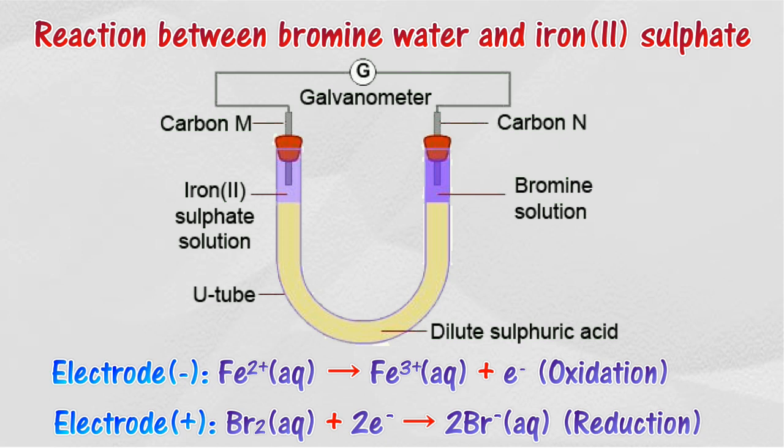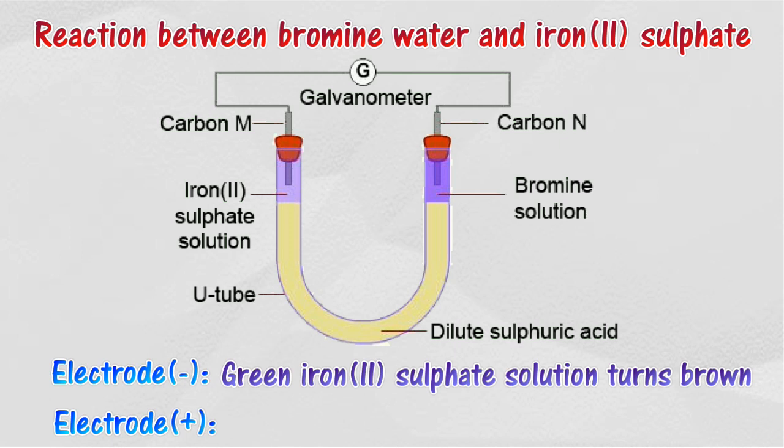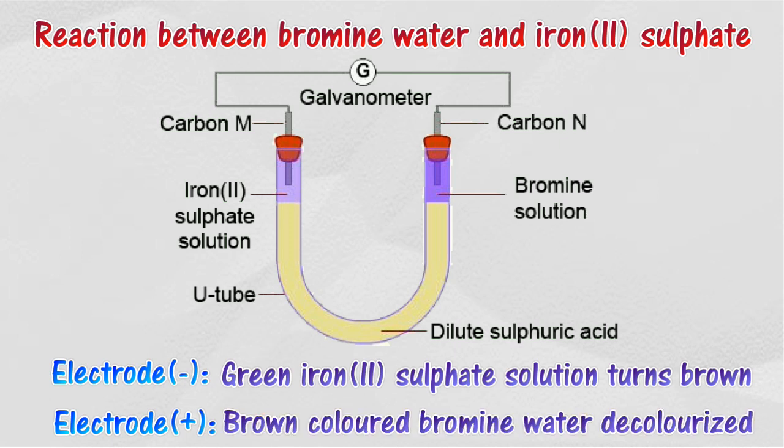The green iron(II) sulfate solution changes to brown. The brown colored bromine water is decolorized.